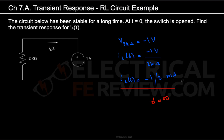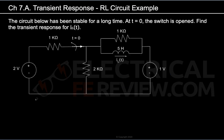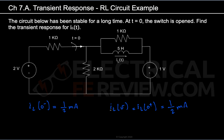Now that we found IL at infinity and IL at t less than 0, let's review the original circuit. We found IL at 0 minus, meaning right before t equals 0, to be 0.5 mA. A very important property is that the current through an inductor cannot change instantly when the switch changes. So IL at 0 minus equals IL at 0 plus — the moment before and after the switch is opened — both equal 0.5 mA. Therefore IL at 0 is 0.5 mA.